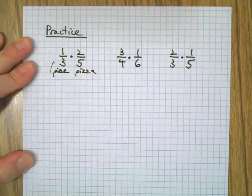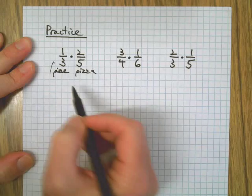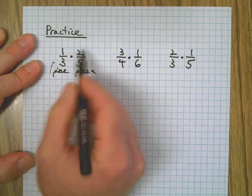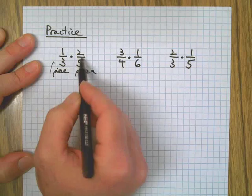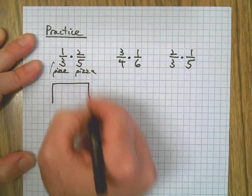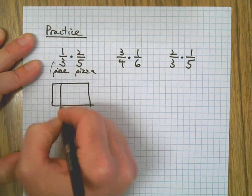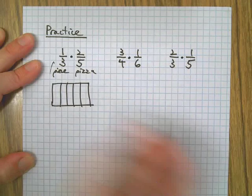We need the thing, we need the piece before we can take a piece of the piece. So first we're going to make the two-fifths. There's the fifths.